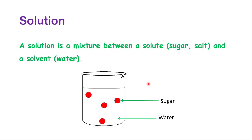Let's think about what a solution is, because to understand osmosis better, you must understand the concept of solution. A solution is simply a mixture between a solute — which could be sugar or salt — and a solvent, which is generally water. Water is considered a universal solvent because it can dissolve most things. The clear portion represents the water, and inside of it you'll see the sugar. When the sugar dissolves, you won't be able to see them separately, because both will be physically mixed together.